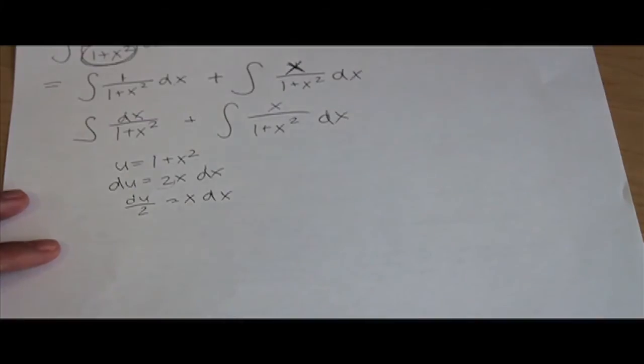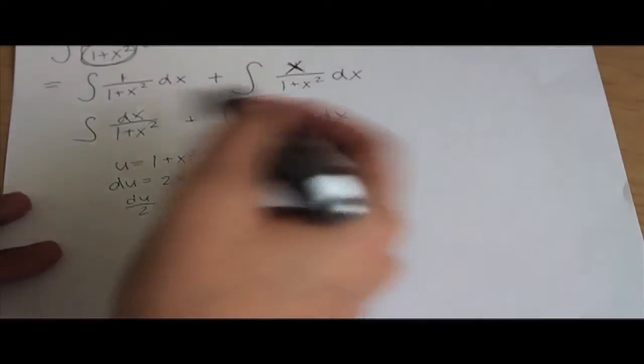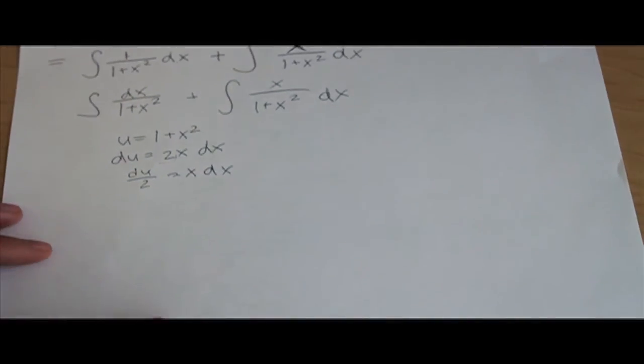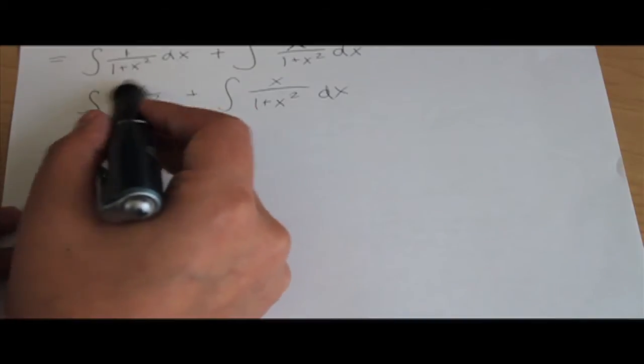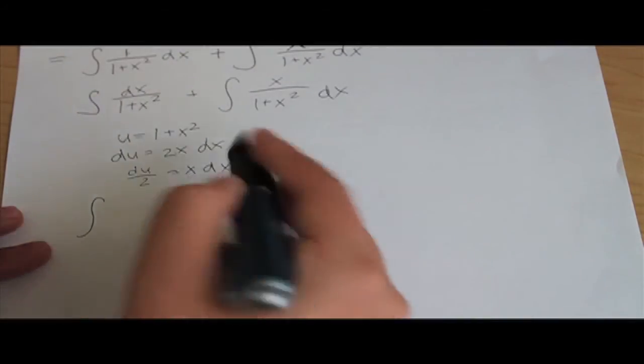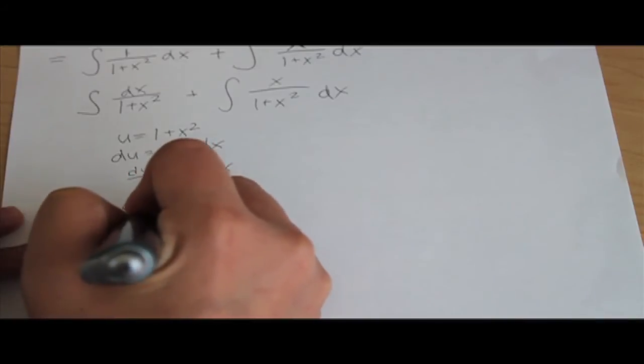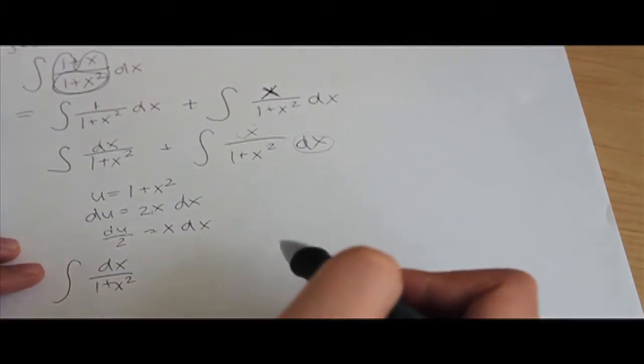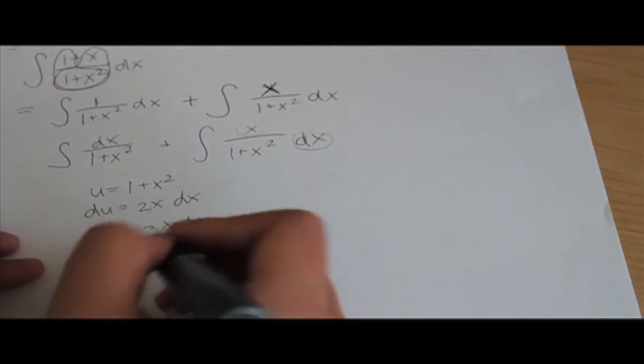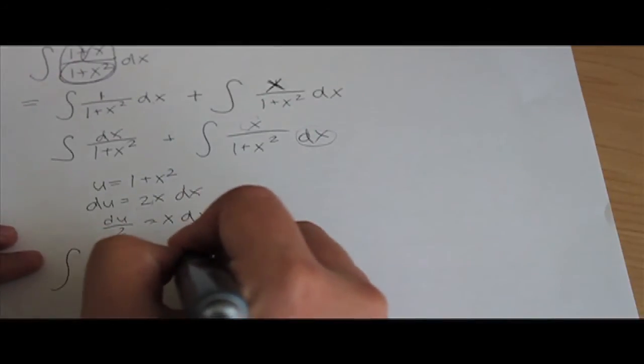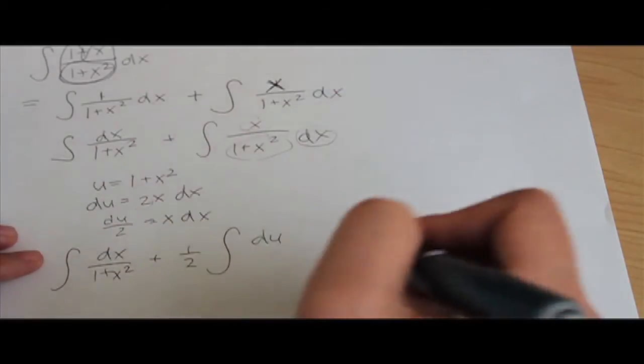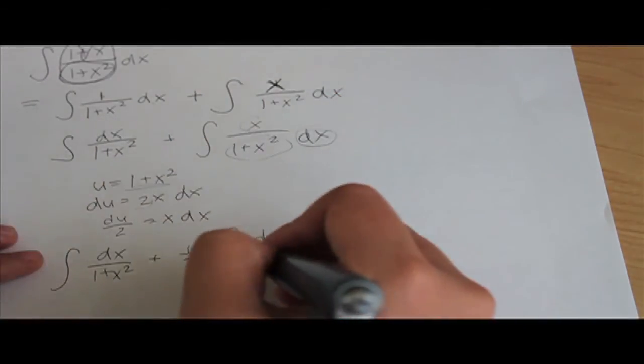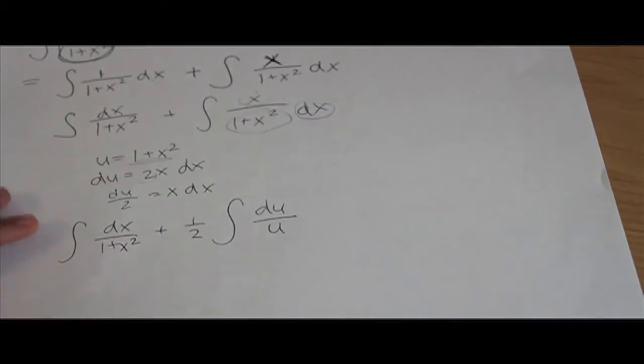So now we're going to plug in our u's and our integrals and simplify it out for us. The first equation is going to be the same because we don't have any x in here to substitute out, so it's just dx over 1 plus x squared. Then our second integral, we do have that x and we do have that dx, so we can substitute the du into it. Since we have this one half, we'll bring that out to the front of the integral and then it will be du over u because that's what we use for our substitution. That's what our new integral looks like.